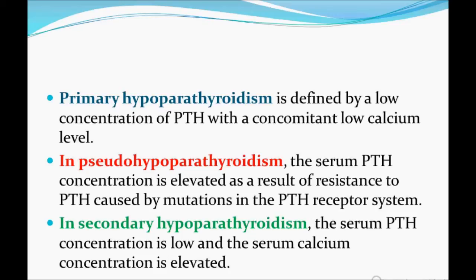Primary hypoparathyroidism is defined by a low concentration of PTH with concomitant low calcium levels — low PTH causes low calcium. In pseudohypoparathyroidism, the serum PTH concentration is elevated as a result of resistance to PTH caused by a mutation in the PTH receptor gene. Even though PTH is high in the blood, it does not act, so the calcium level drops and the PTH present in the blood is essentially wasted.